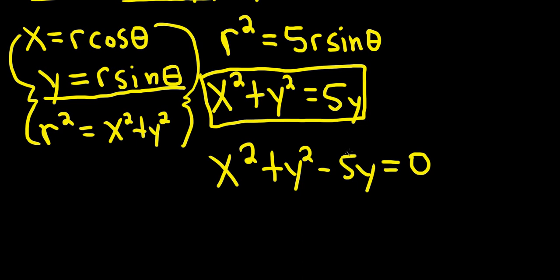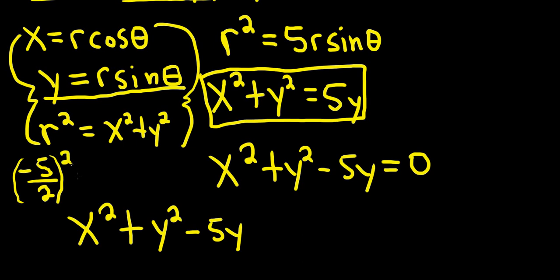And then what you would do is you would complete the square in y. So the x stays the same. So you have x squared plus y squared minus 5y. And what you do is you take the coefficient of y, so negative 5, you divide it by 2, and then you square the result. This will become 25 over 4. So what you add to one side, you have to add to the other. So you add that to both sides.